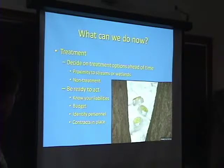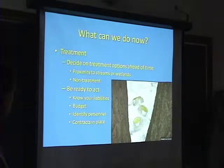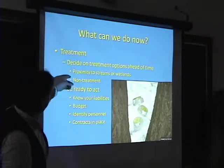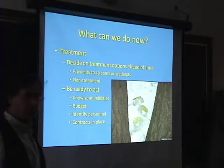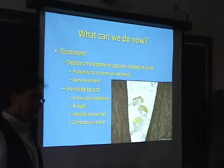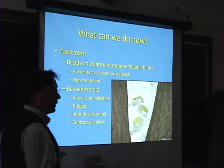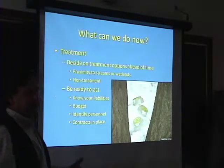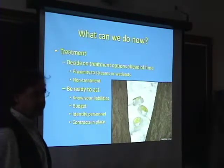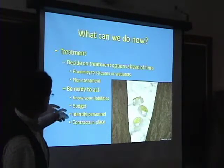Then, if you've got pet trees and you've got enough money, you can treat them and save them. You need to be well aware of proximity to streams and consider non-treatment as an option. We do have time — it takes a while to kill the tree, and if it really comes down to it, you can wait a couple of years and see what's happening. But it's going to start spreading from that spot, and you've got to know your liabilities. When you have a dead tree on your property, you've got to get rid of it so it doesn't fall over and hit somebody on the head.